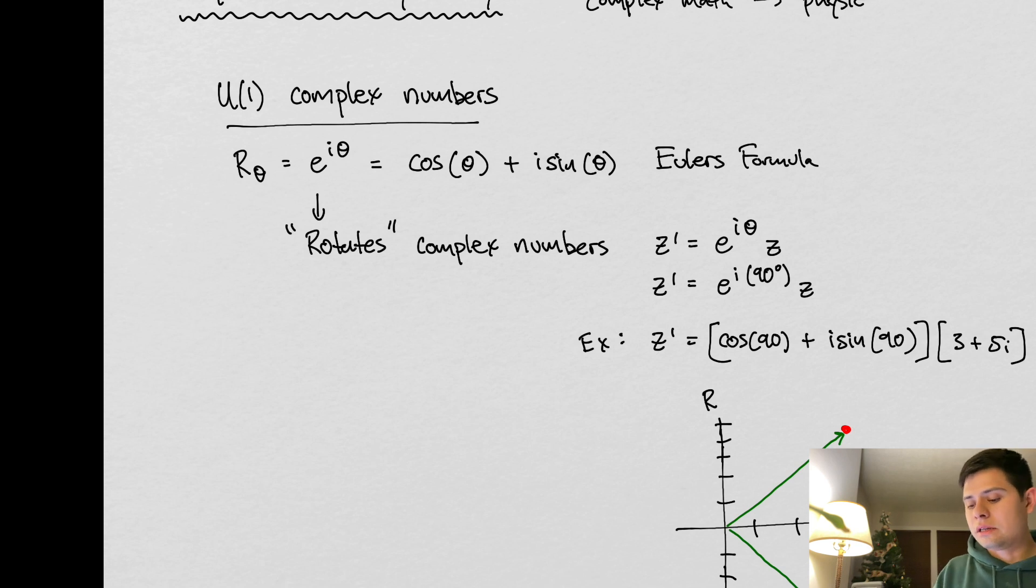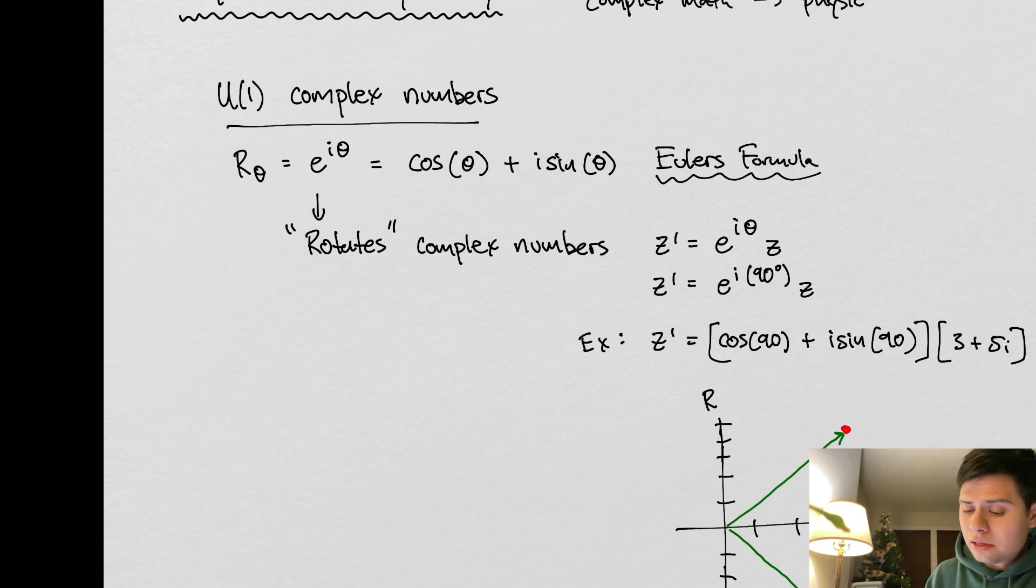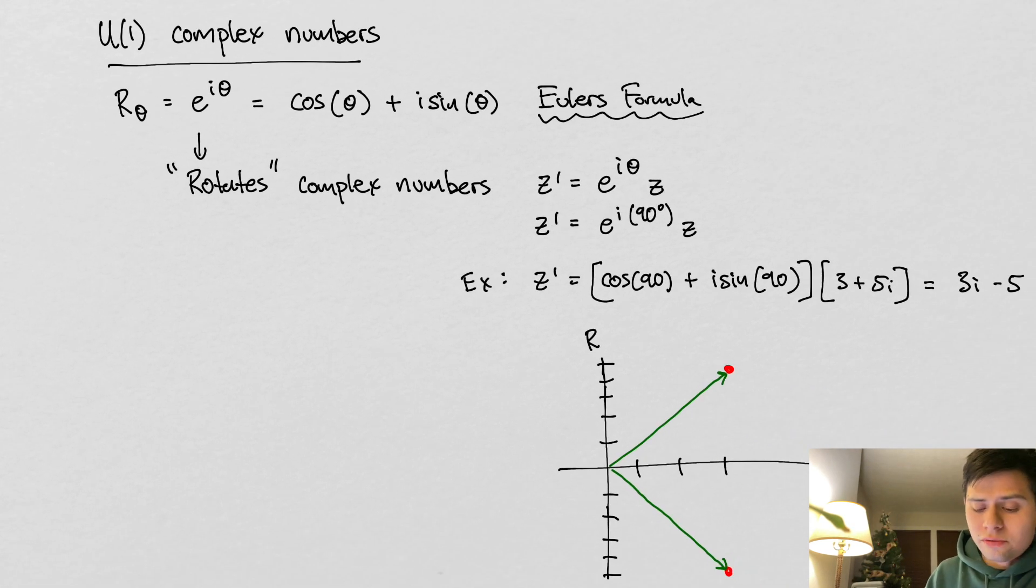This is typically taught in a calculus 2 class, maybe calculus 1 if you're lucky. It's been a while since I've taken calculus, but this is the foundational point. We think of this exponentiation of an i factor as some mathematical object that rotates complex numbers.